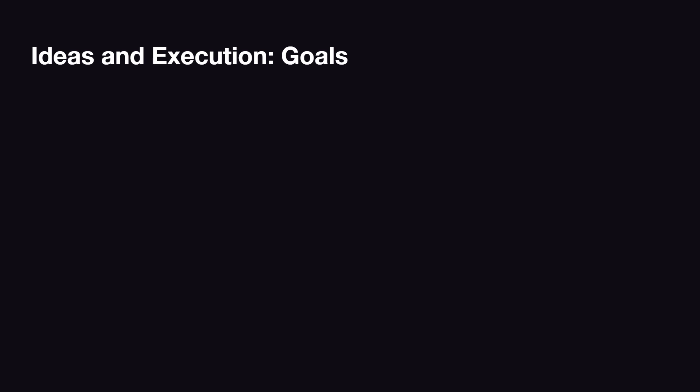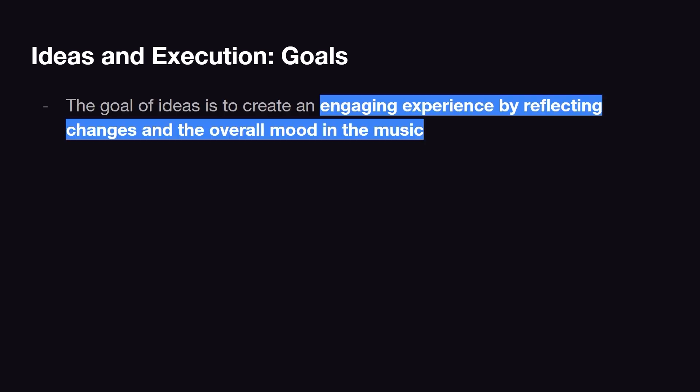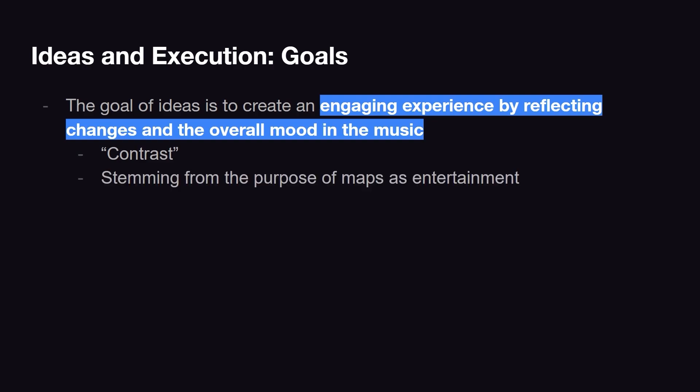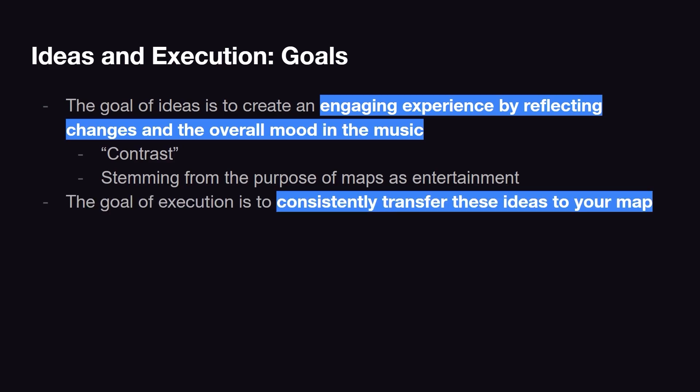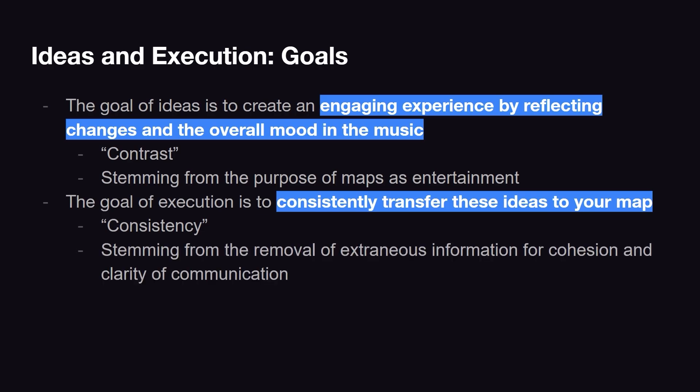Each of these aspects of mapping has a specific goal. In your ideas, you want to create an engaging experience by reflecting changes in the overall mood in the music — what people would usually call contrast. Osu is a video game, so maps generally serve as entertainment and engaging maps are entertaining. In your execution, you want to transfer these ideas to your map consistently. Having more consistent execution means less extraneous information, which means you're communicating your ideas more clearly to the player.